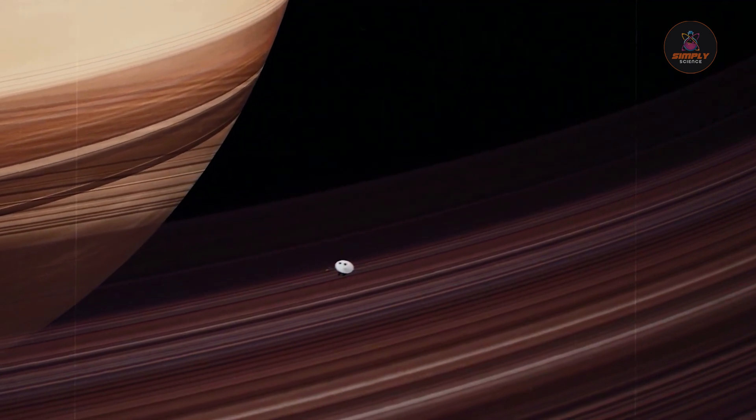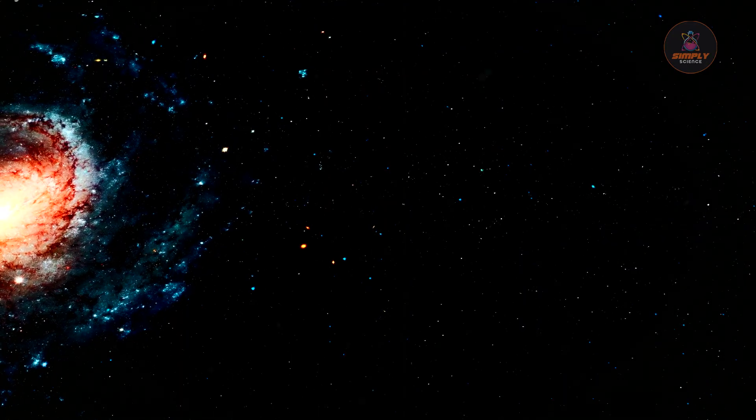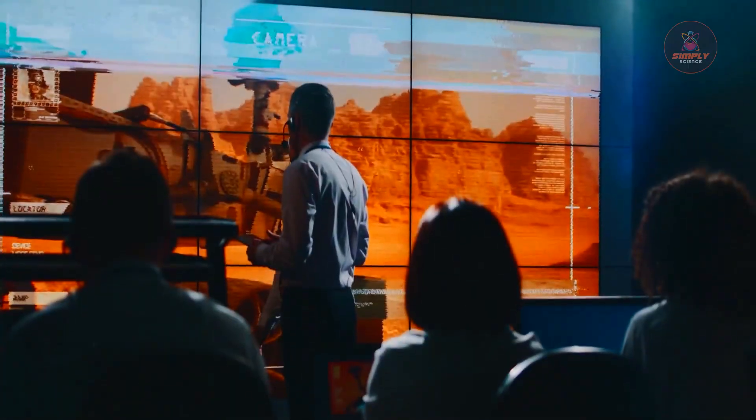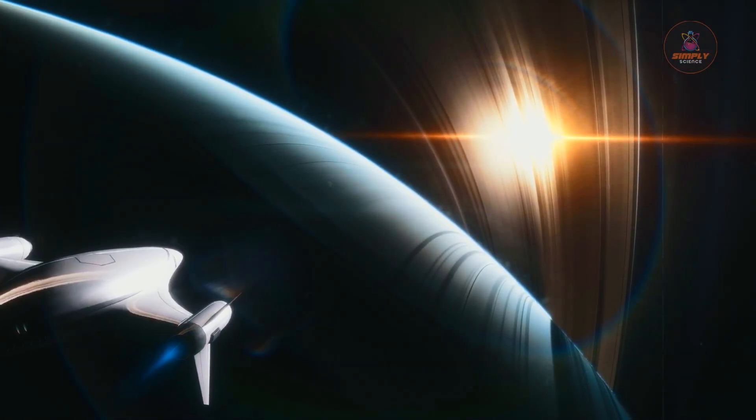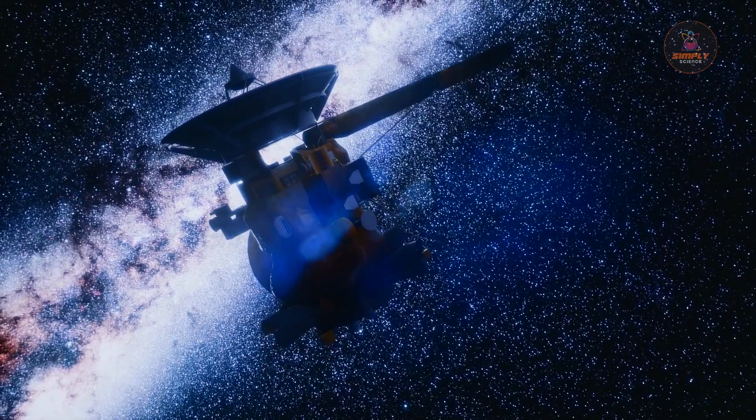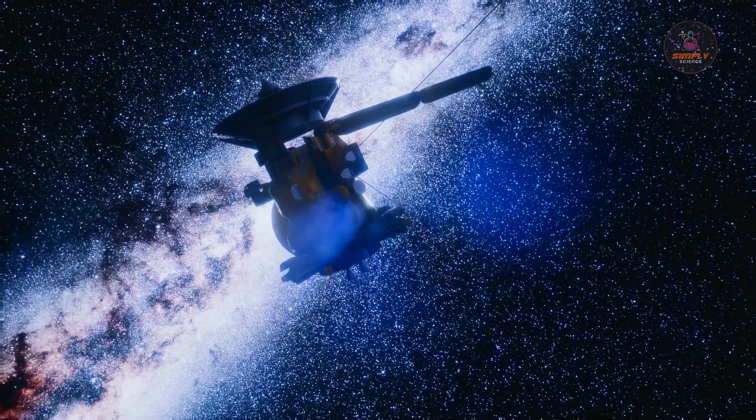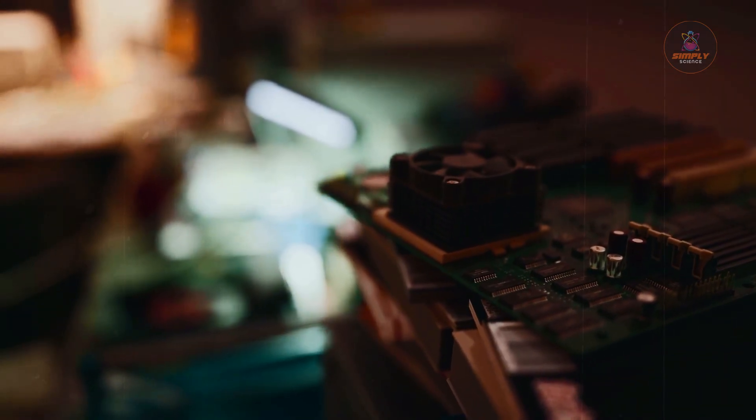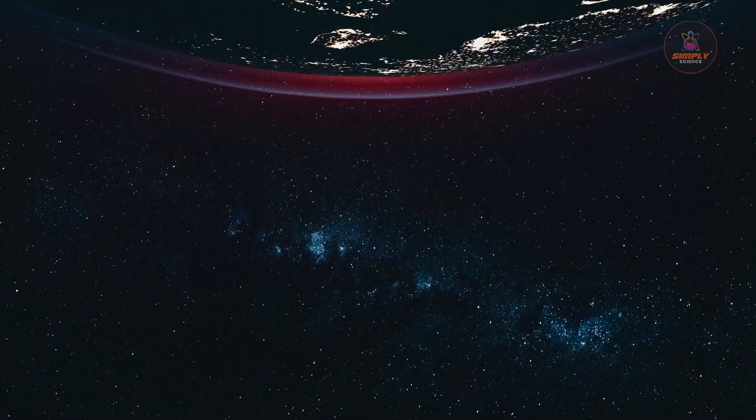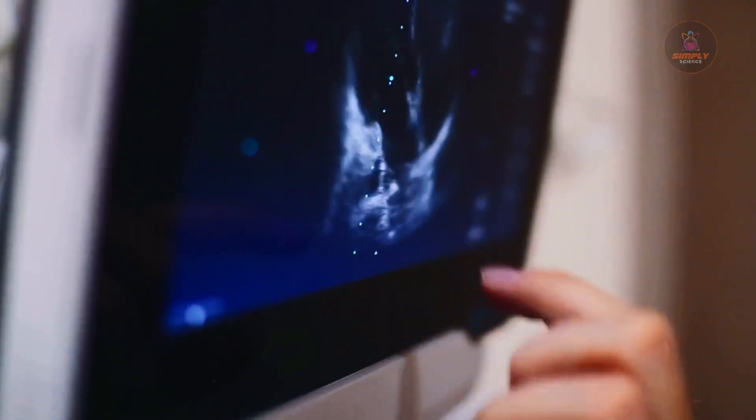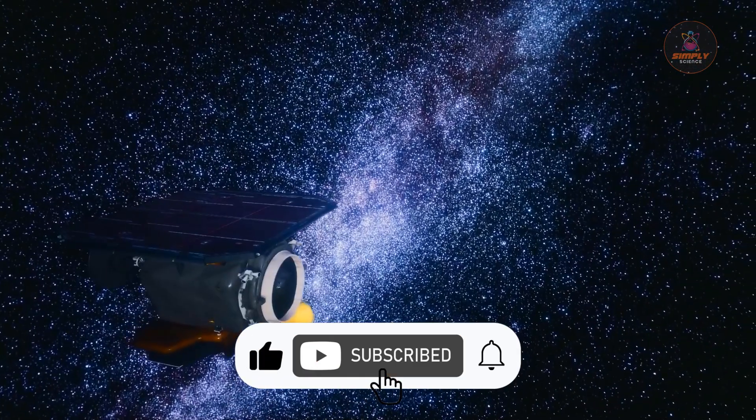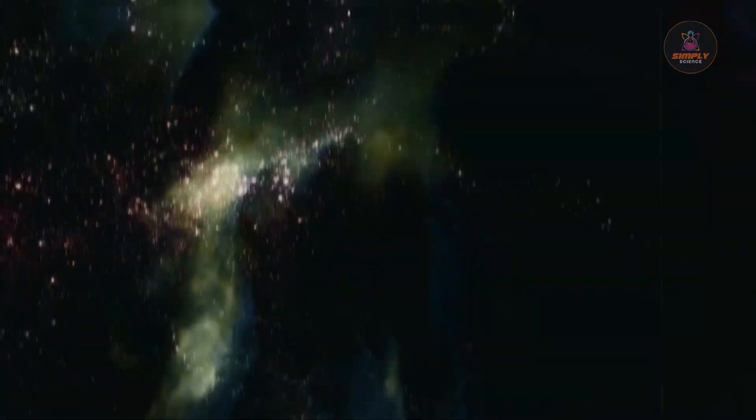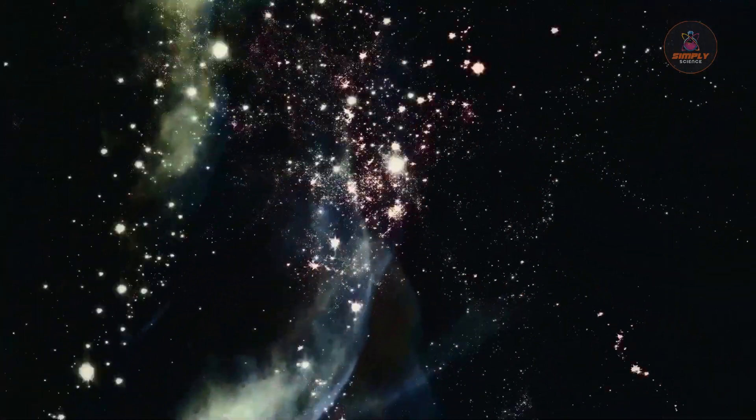So there you have it. Voyager 1 didn't just reach the edge of our solar system, it revealed that we're living in a cosmic masterpiece we never knew existed. From digital CPR performed across 15 billion miles to discovering we're nestled inside a protective cosmic oasis, this incredible journey proves that the universe is far more amazing than we ever dared to imagine. If you're fascinated by the incredible stories of space exploration, make sure to hit that bell icon and subscribe because the universe has so many more secrets waiting to be uncovered.